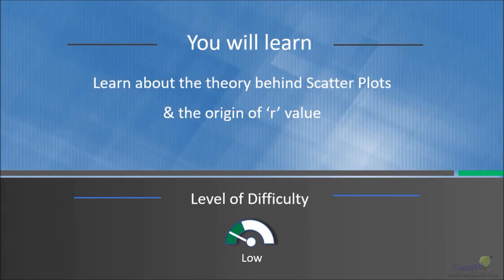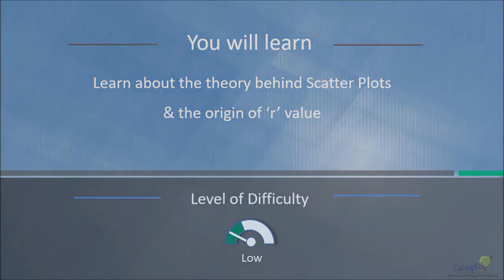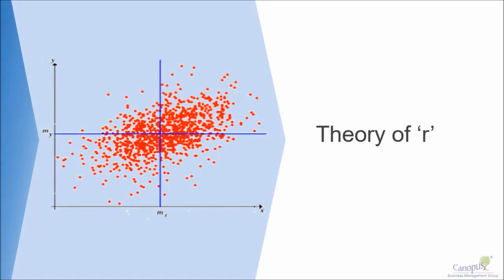In this lecture, we will learn about the theory behind scatter plots and the origin of r value in scatter plots. I want to give you a little bit of background of the theory behind how we get the values for correlation coefficient. I'm sure in your basic course you learned that the correlation coefficient, represented by rho or R, is usually between minus 1 and plus 1.